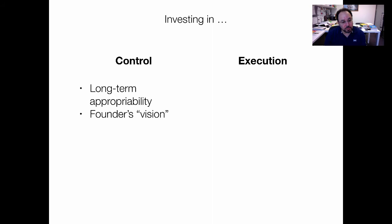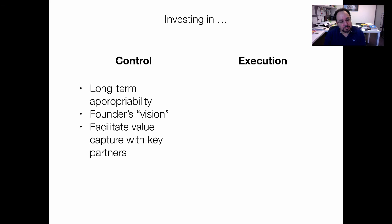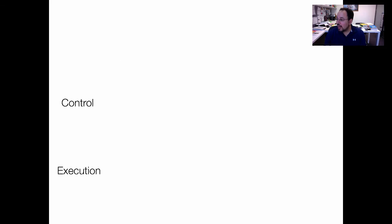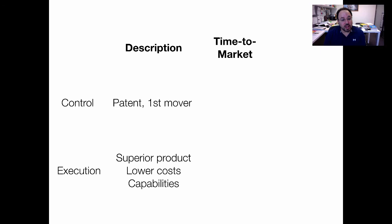Investing in these two things is different. Control focuses on long-term appropriability — it is part of implementing and controlling the founder's vision and facilitating how you capture key partners. Execution is focused on getting to market quickly, taking advantage of feedback and experimentation, and doing so at a lower cost. Control looks like pursuing a patent or being a first mover; execution looks like having a superior product, lower costs, and capabilities. Time to market is slow for control, faster for execution. Future returns in control depend on unique assets, while future returns from execution depend on unique capabilities.